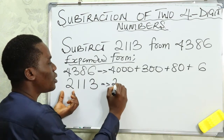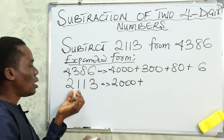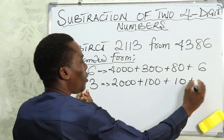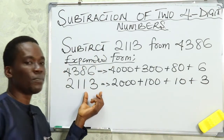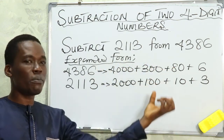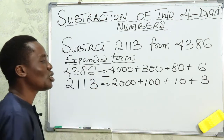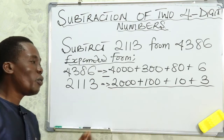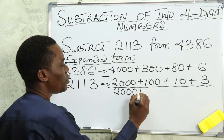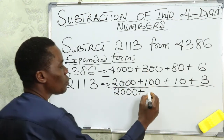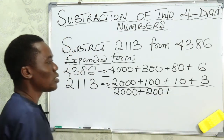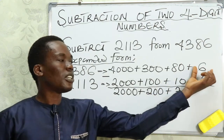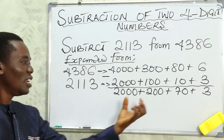Now we expand 2113: two is in the thousands giving 2000, plus one in the hundreds giving 100, plus one in the tens giving 10, plus three in the units giving 3. Remember, this time we are doing subtraction. So: 4000 minus 2000 gives 2000; 300 minus 100 gives 200; 80 minus 10 gives 70; and 6 minus 3 gives 3.